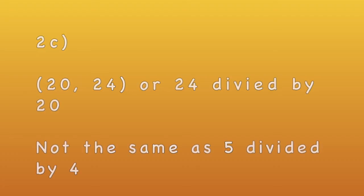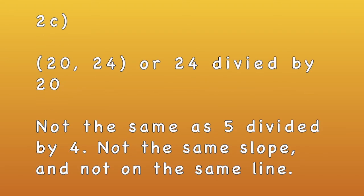2C is a little bit different. They're asking about the point (20,24), or 24 divided by 20. And that's not the same as 5 divided by 4. They have a different slope, so these would not be on the same line.